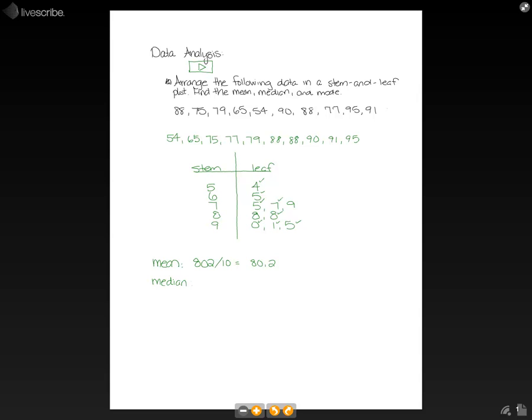Since we're left with two numbers, the 8 and the 9, our median is actually going to be the average of those two numbers. So we have 79 plus 88, divided by 2, gives us 167 over 2, which in turn gives us 83.5.